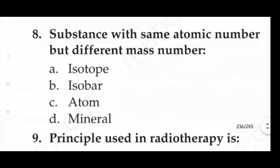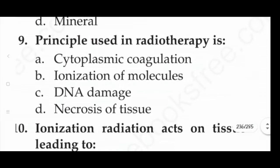Next question: a substance with the same atomic number but different mass number — option A: isotope, option B: isobar, option C: atom, option D: mineral. The answer is option A, that is isotope.